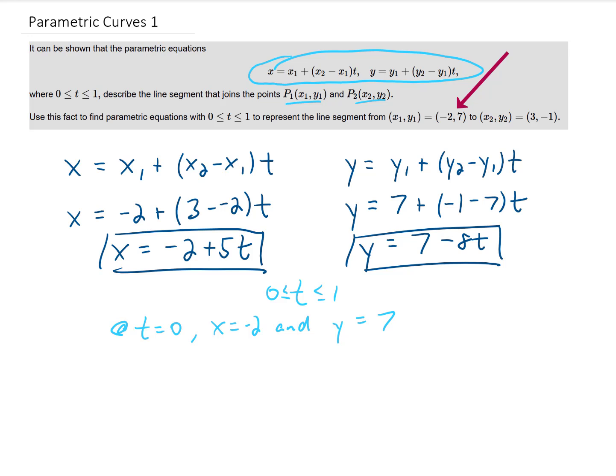So when t equals 0, we start at our initial point, and at t equals 1, plugging t equals 1 right here gives us x equals 3, and plugging t equals 1 right here gives us y equals negative 1. The point 3, negative 1 is the second point that we were given, and that is our final point of our line segment.